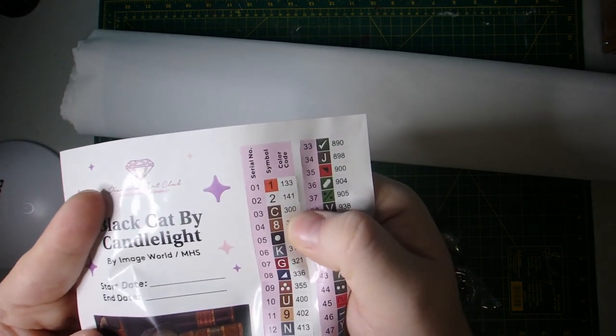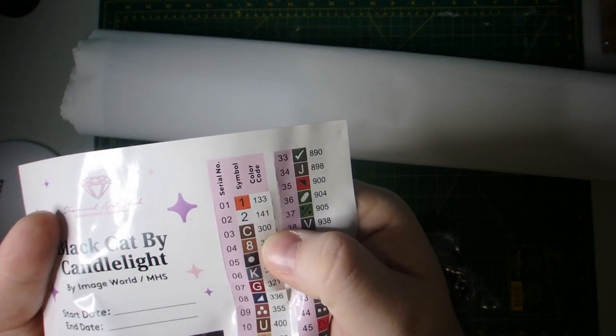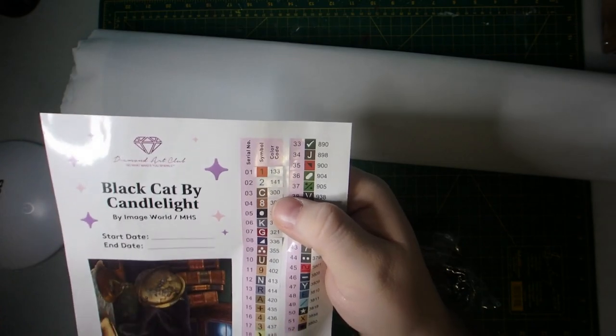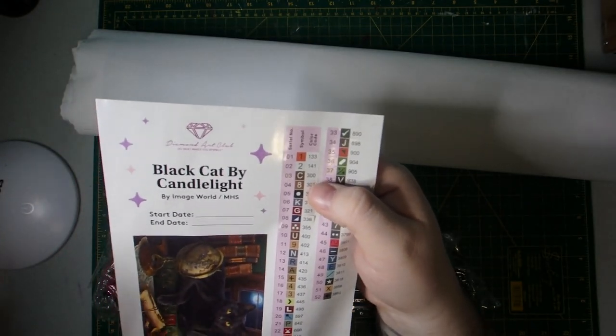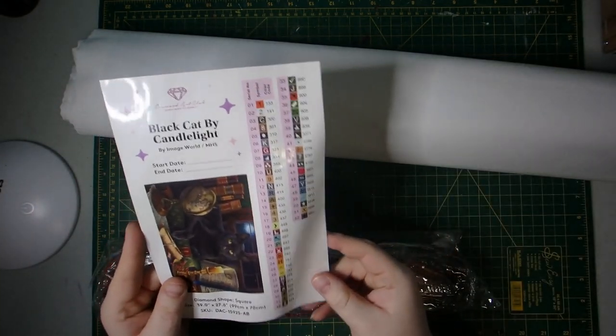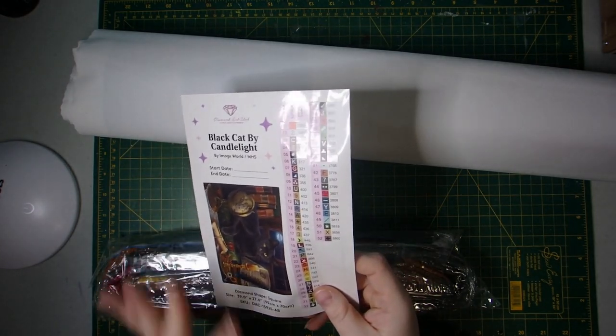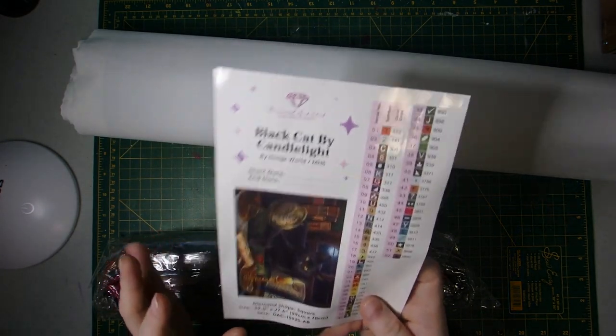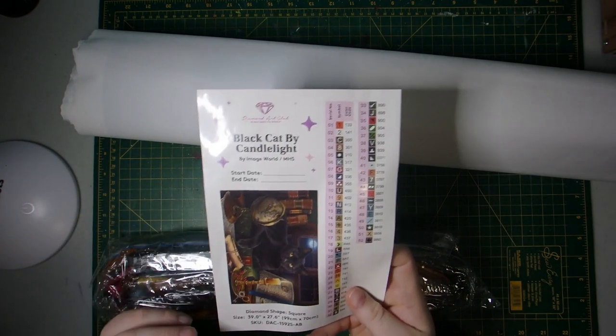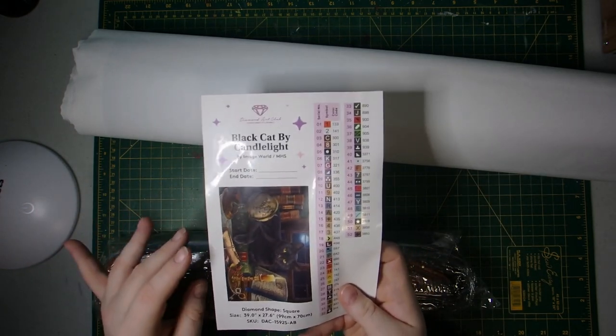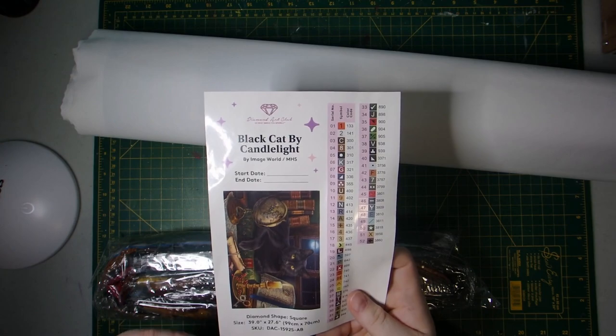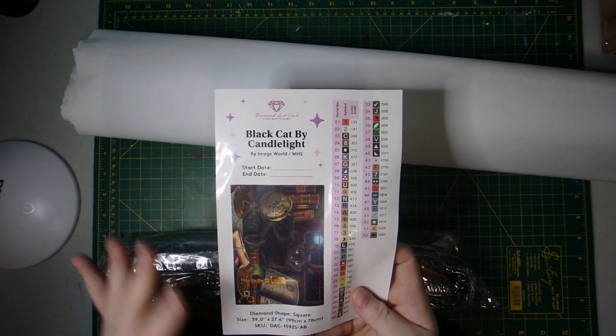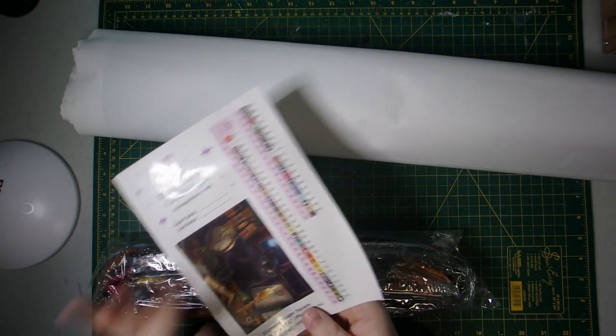So this kit, as you can see right there, the first two are ABs. So there will be two ABs, which if you don't know, that just means Aurora Borealis. And that is a drill that has the iridescent coating that makes it shimmer and sparkle just a little bit brighter. And it's used to help kind of accent and highlight certain parts of the artwork.